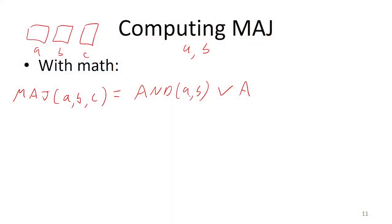One option for how I could satisfy the majority is for A and B to both be 1. Or it could have been that maybe B and C were both 1. Or it could have been that A and C were both 1.